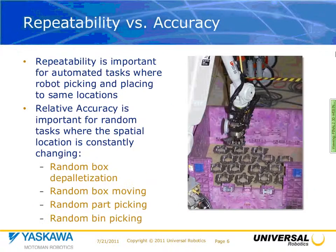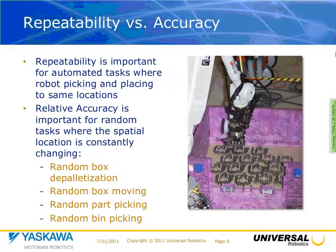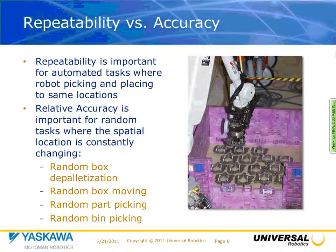Let's talk about the difference between repeatability and accuracy. Repeatability is very important for a robot that's going to continue to go to the same point — for instance, finding the centroid of a particular drill point or machined part. When you get into random behavior, whether it be random box detail, part picking, or a pile of parts in a bin, there is no ability to rely on repeatability, so accuracy becomes what matters.